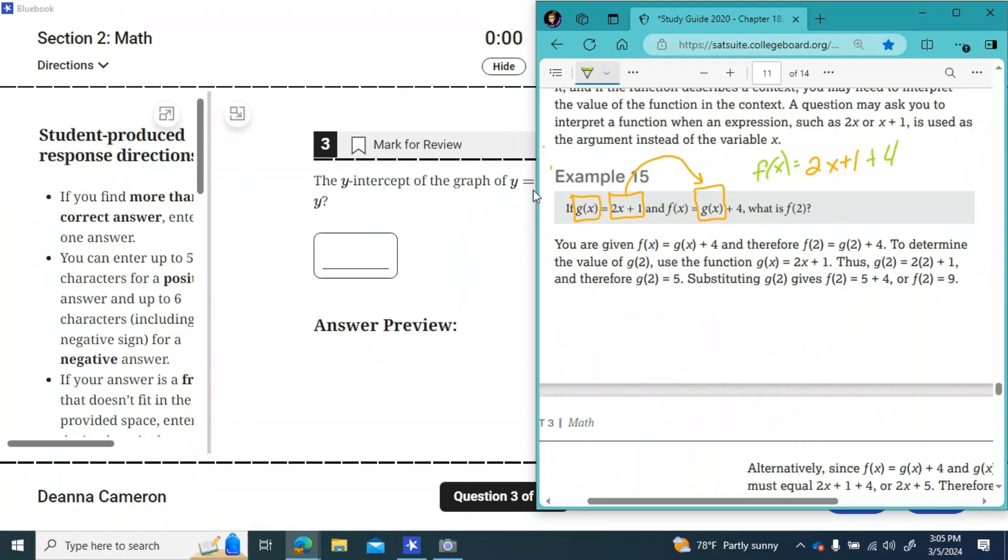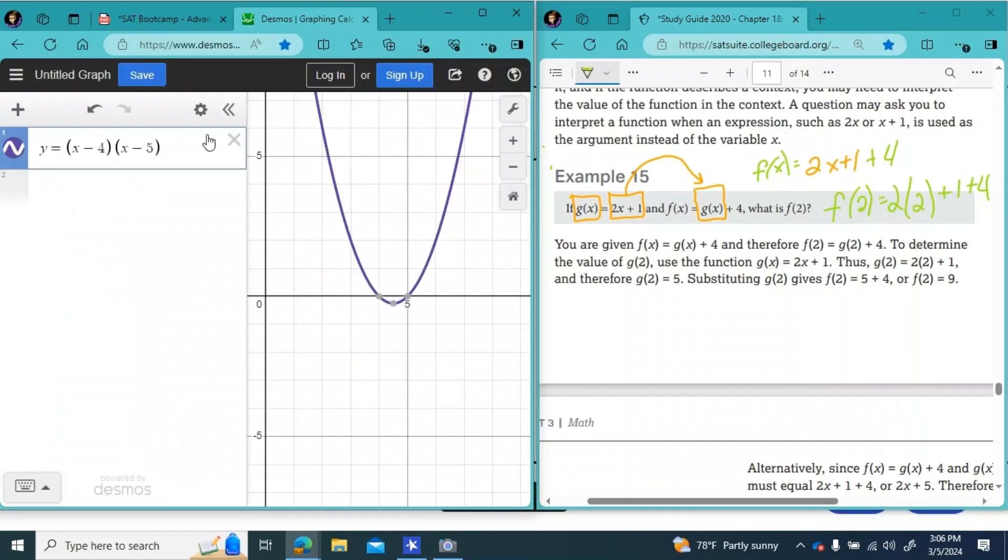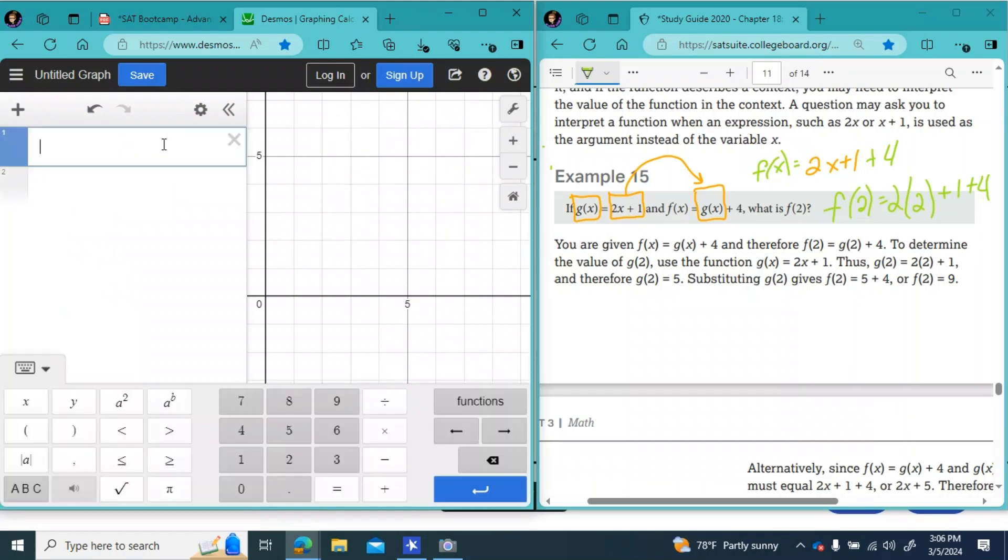And now it's asking, what is the F of two? So we're just going to take our X and write a two wherever we see an X. So F of two equals two. And instead of X, I'm going to put another two plus one plus four. If you don't feel like adding, right? Just multiply it two times two and add it plus one plus four. We're on nine and we've got a match to the answer key. So we know that is the answer to example 15. Nine.